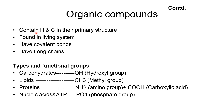Organic compounds have functional groups — chemical groups that determine their properties. There are three or four types of organic compounds: carbohydrates with a hydroxyl functional group, lipids with a methyl group, proteins with amino and carboxylic groups, and nucleic acids including ATPs with a phosphate group.